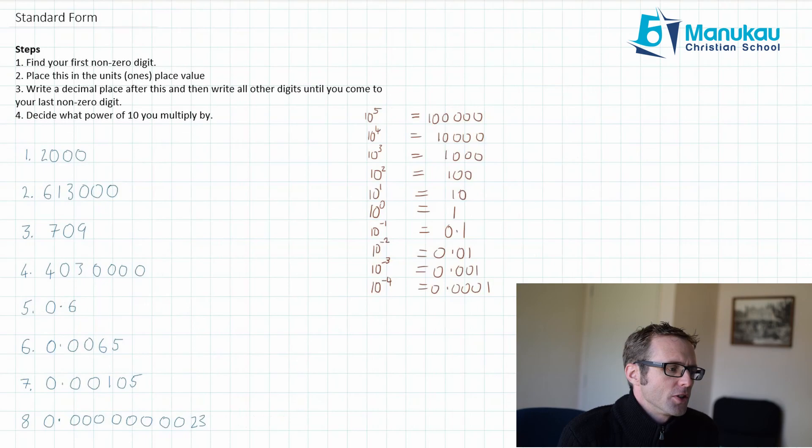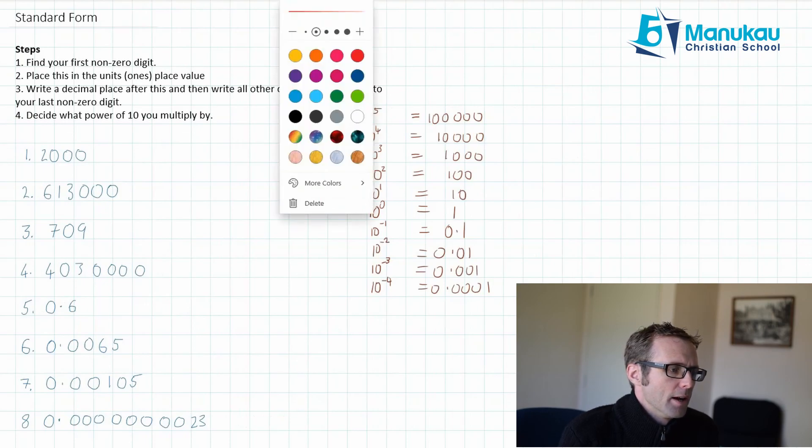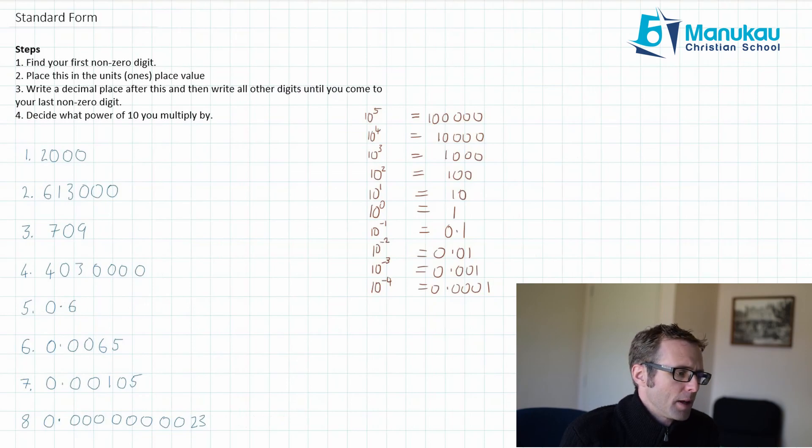The steps are that you want to find your first non-zero digit. So we'll do that now with 2000. The first non-zero digit is 2. My second step is I place this in the units place value and I'll write a decimal after that. Then I write all of the other digits until I come to the last non-zero digit. Well there are no other digits that are non-zero so I can just straight away decide what power of 10 I'm going to multiply by. Now I'm at 2000 so I need to multiply by 10 to the power of 3. A quick and easy check is to count the number of digits after your first one. There are 3 so yes it will be 10 to the power of 3.